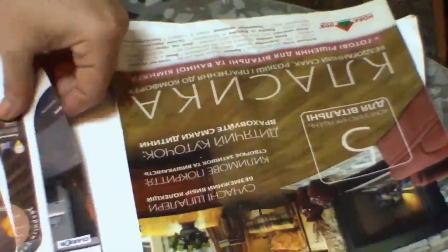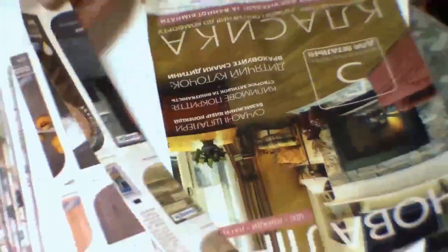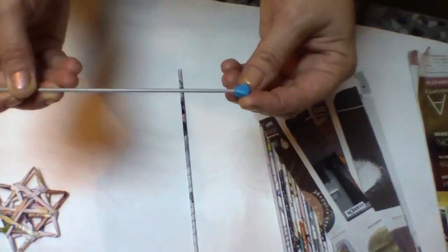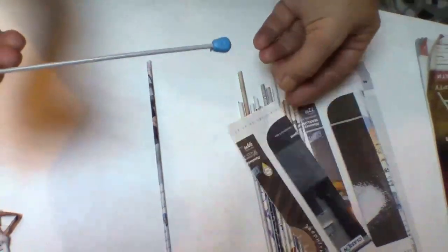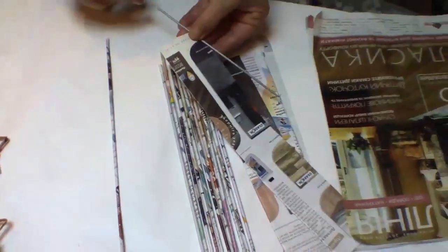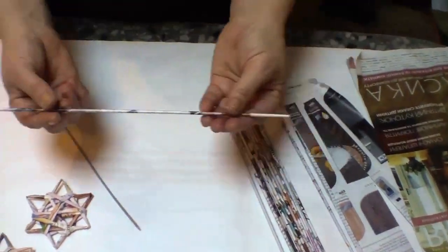I've cut every sheet into four stripes. I've used a knitting needle 2.5 mm thick, a bit thicker than I usually use, and I've rolled some tubes like this.